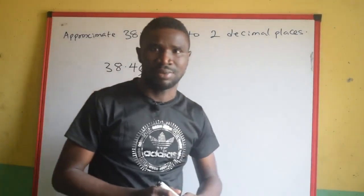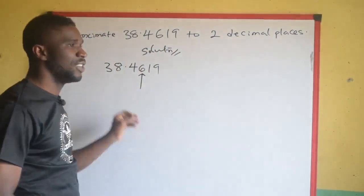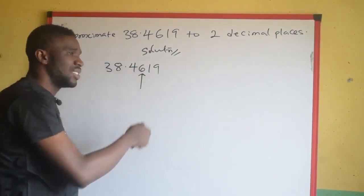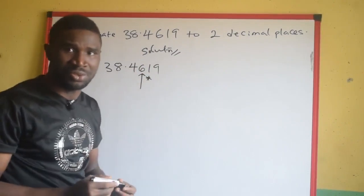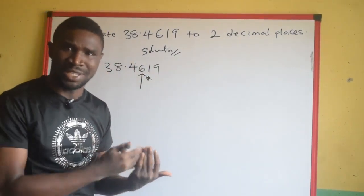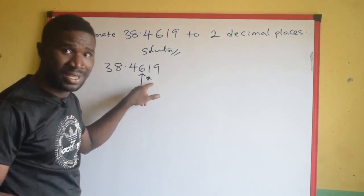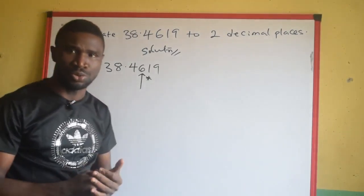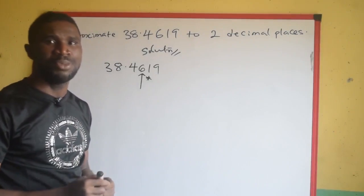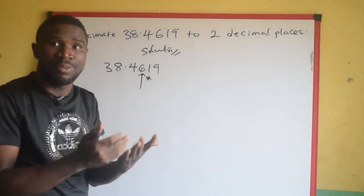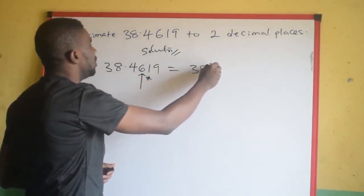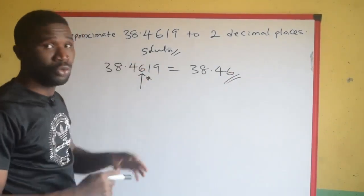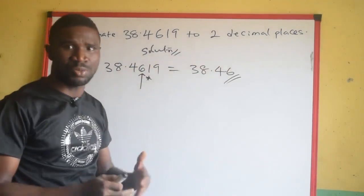I can use an arrow to indicate where I stop. The next question I should ask myself is: what is the next number after where I am supposed to stop? I am supposed to stop at 6, but the next number after 6 is 1. I put an asterisk there, which means I want to compare. I ask myself: is this 1 up to 5? Since 1 is not up to 5, we round down, which means don't add anything. So we write the number up to where we stopped, and we get 38.46 as the answer.